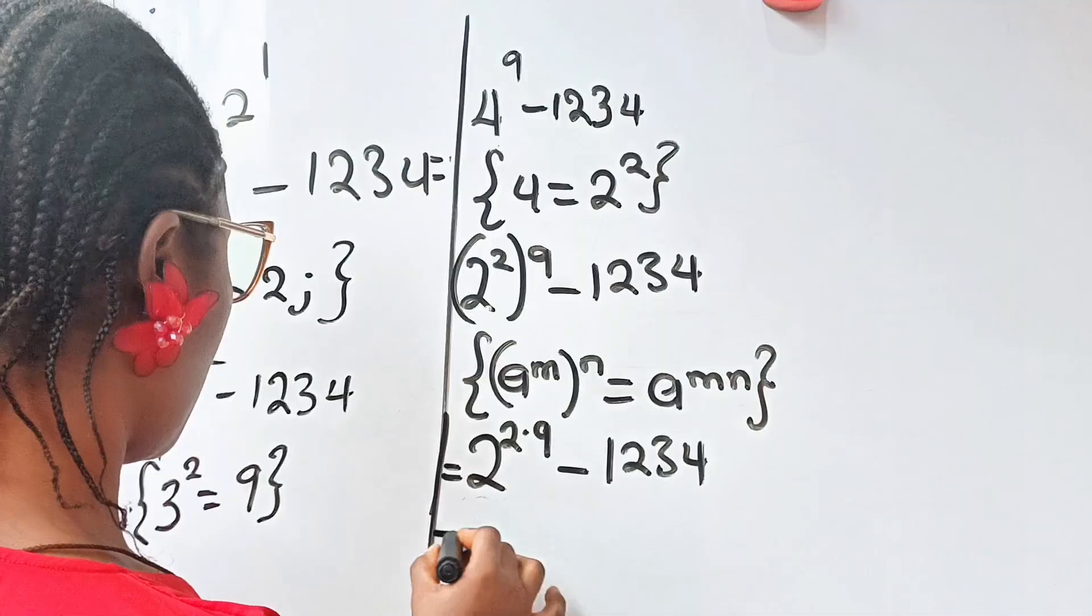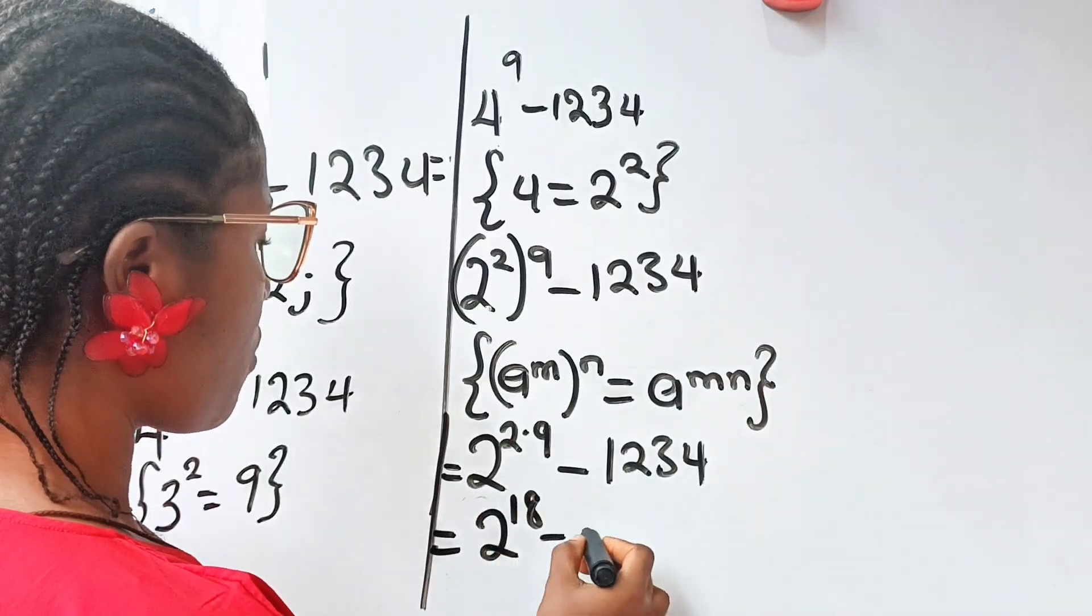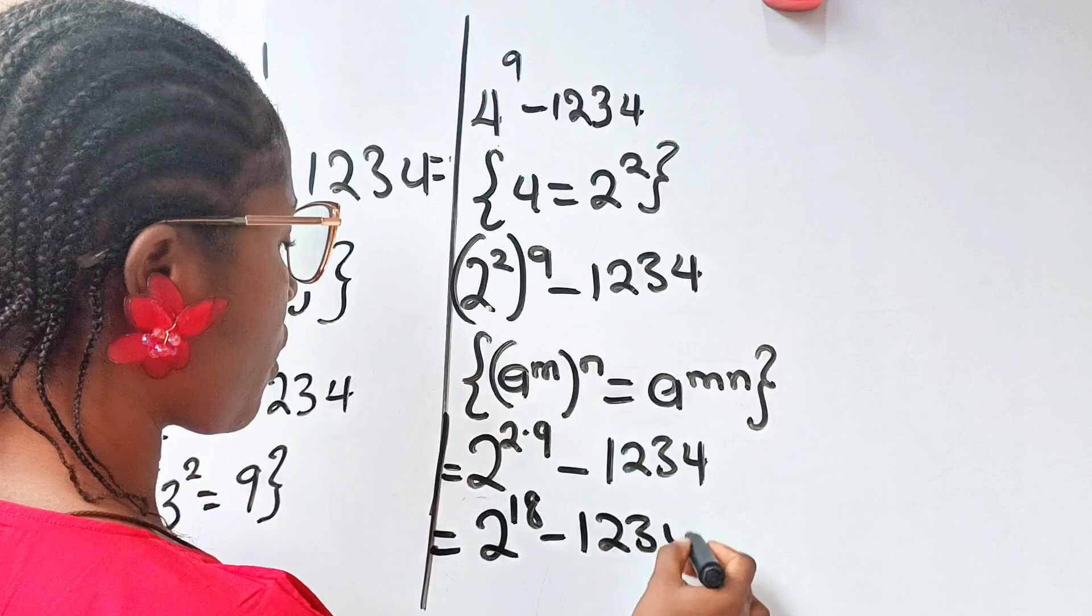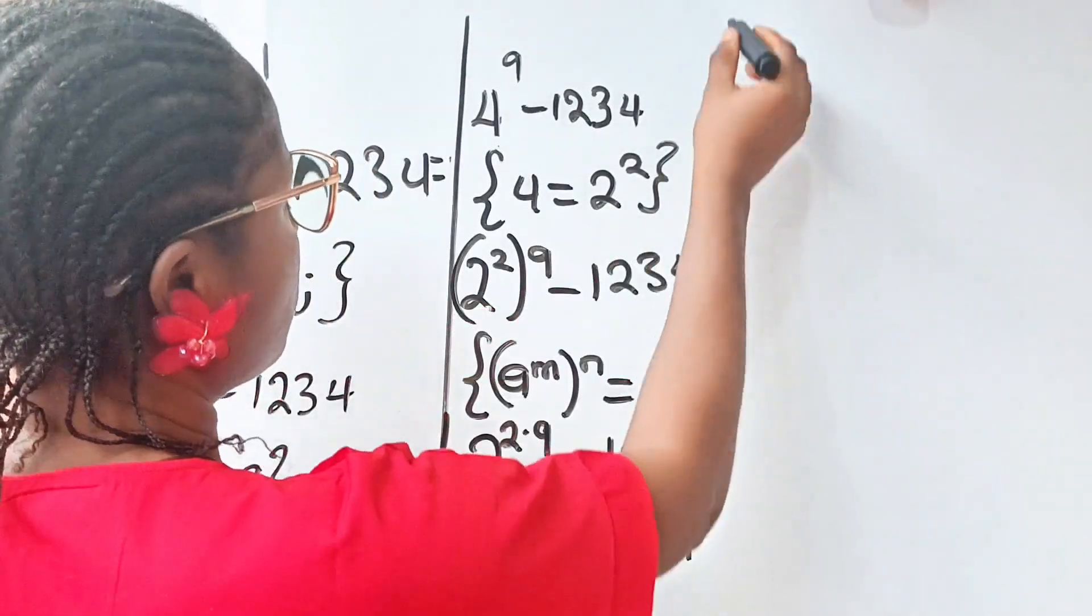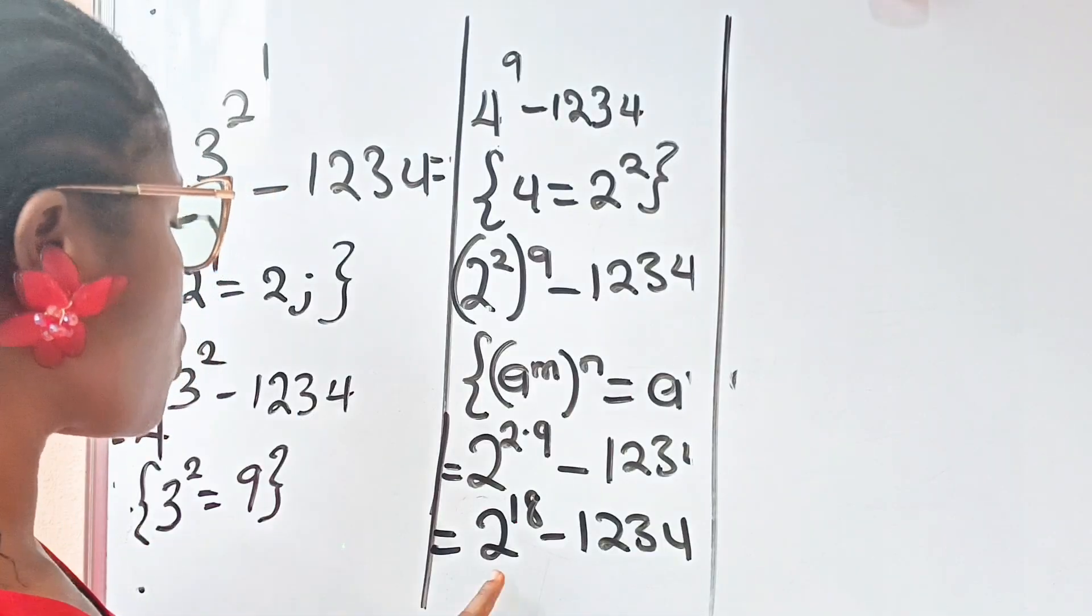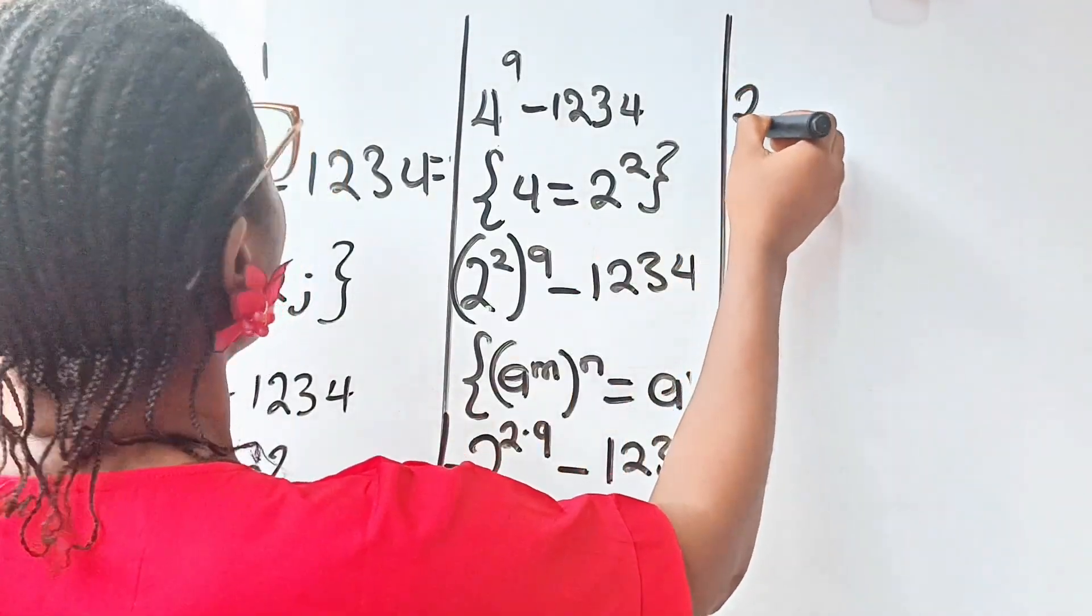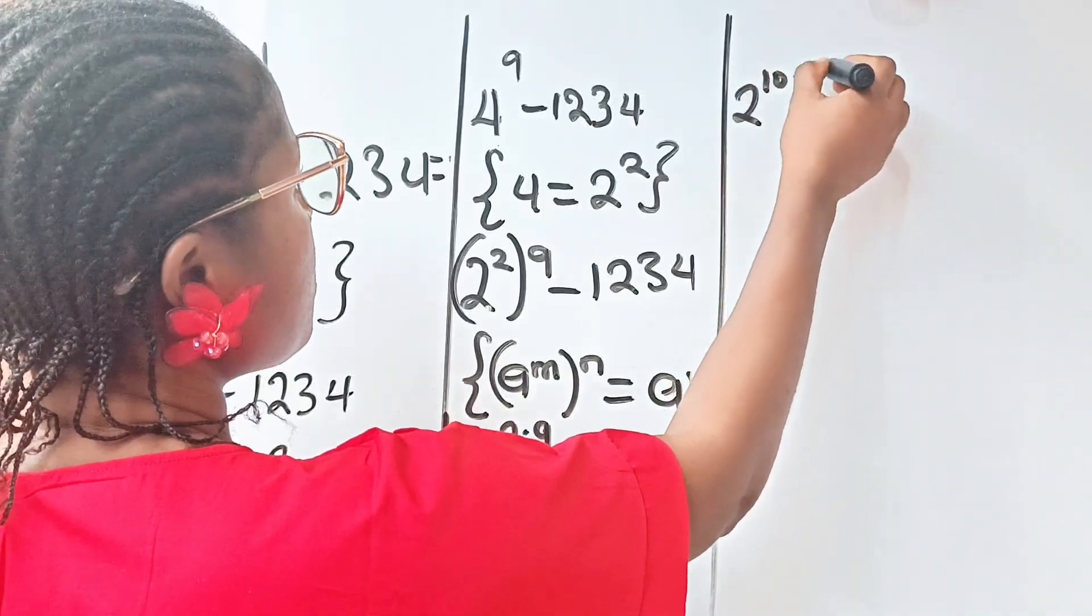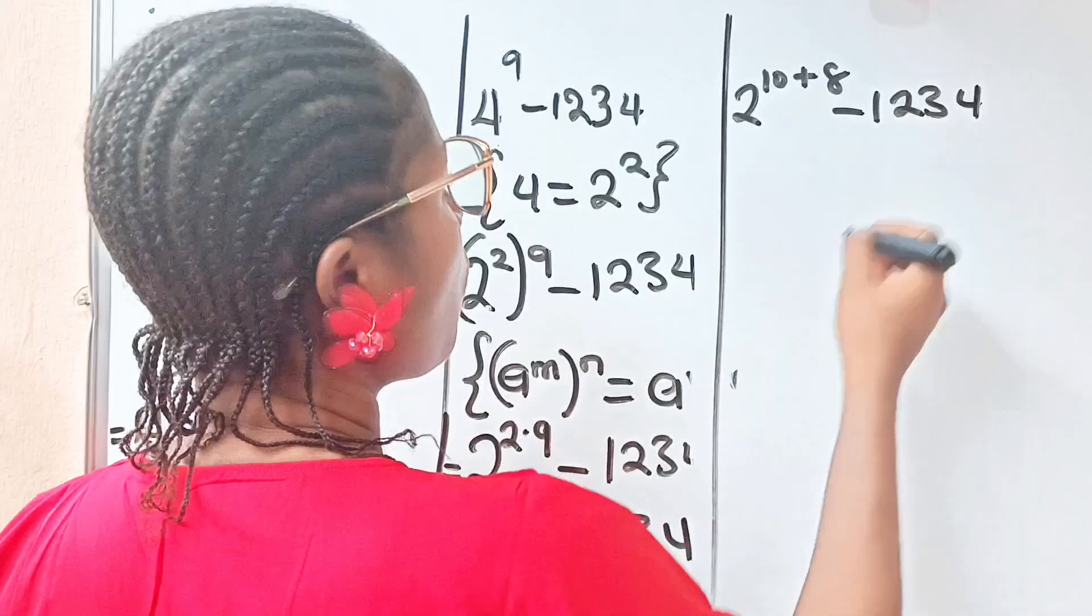Therefore, we have this to be equal to 2 to the power of 18 minus 1234. So, we continue. 2 to the power of 18 can be written as 2 to the power of 10 plus 8 minus 1234.